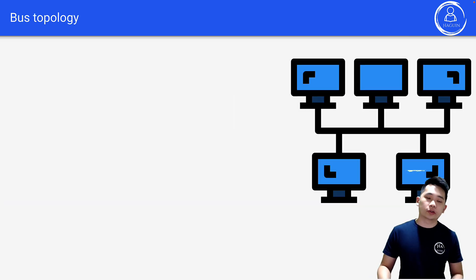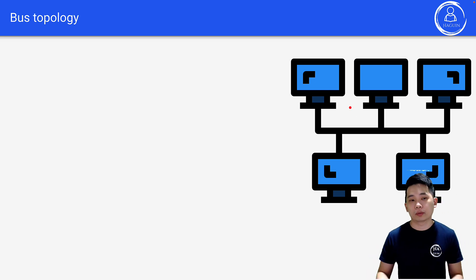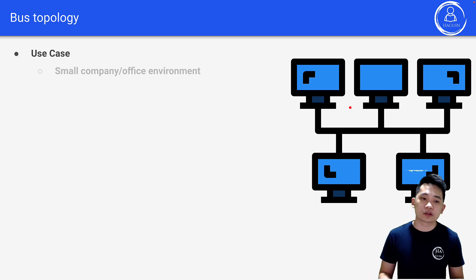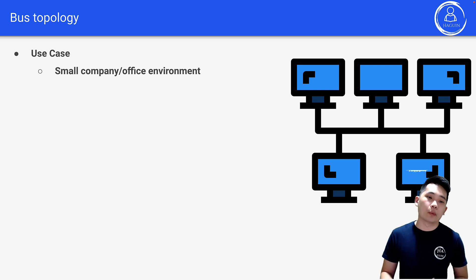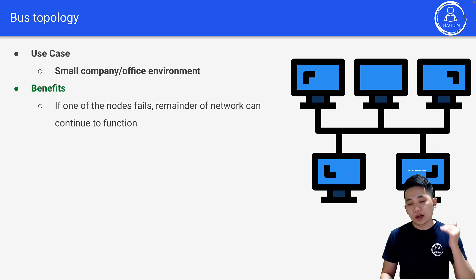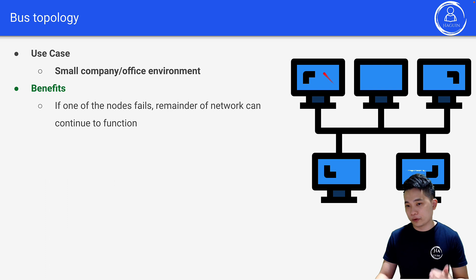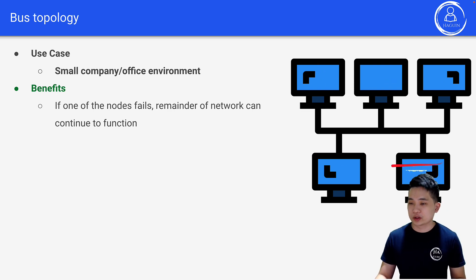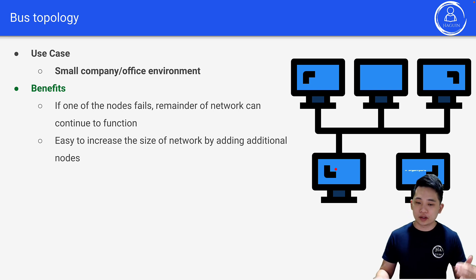Looking at bus topology — as shown in the figure on the right — it is used in small company or office environments. One benefit is that if one of the nodes fails, the remainder of the network can continue to function. So if this node fails, the other nodes can still function.